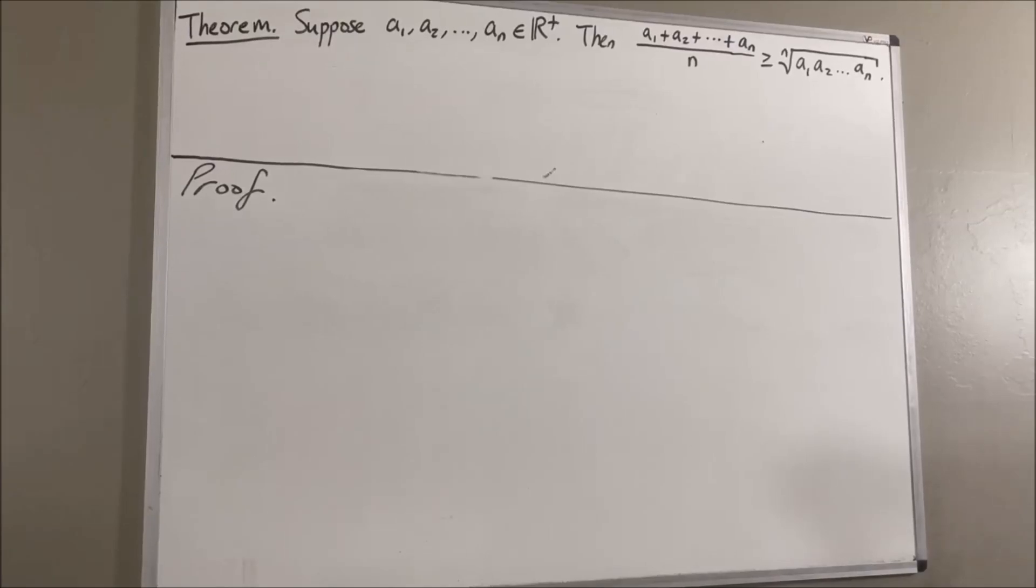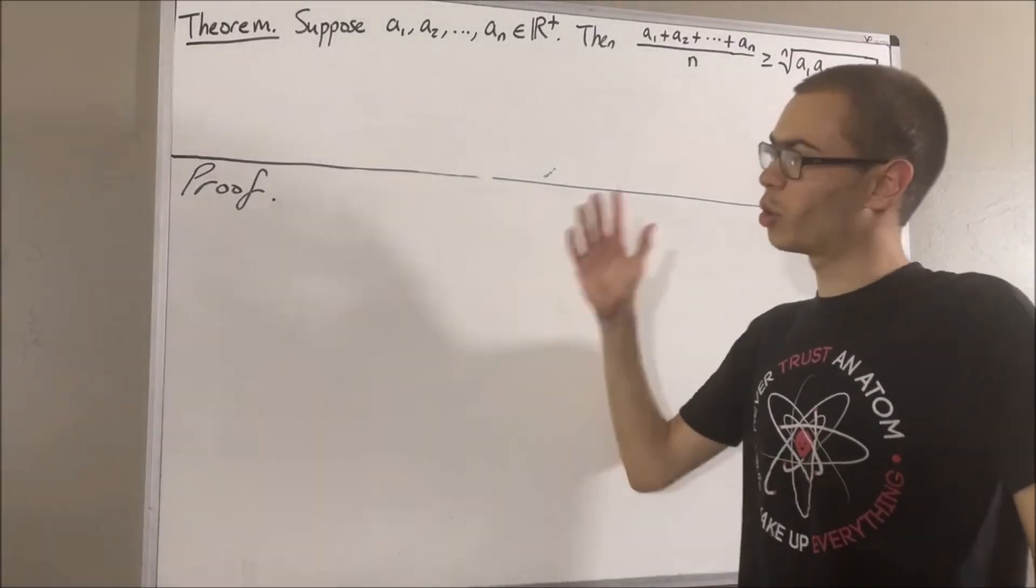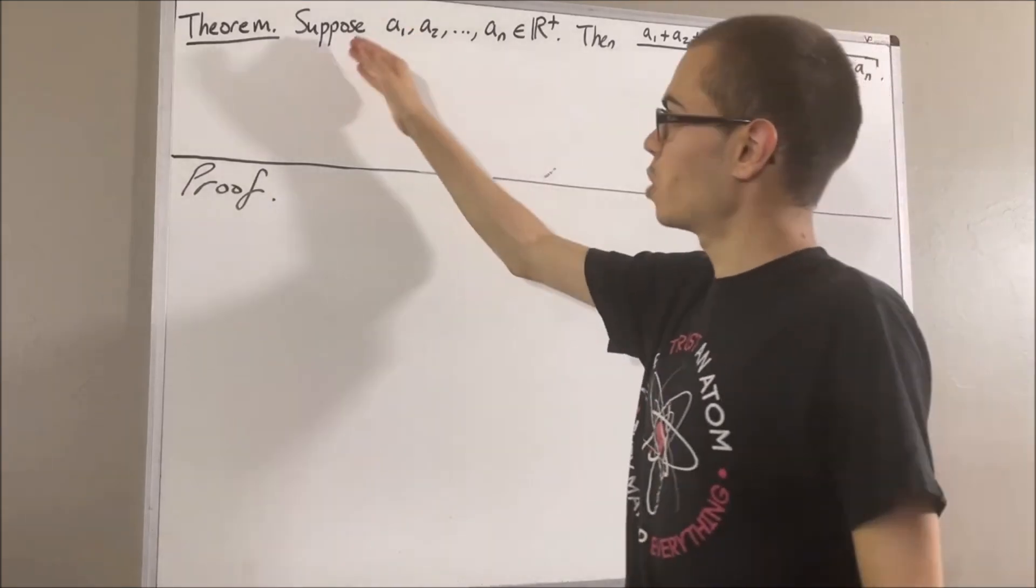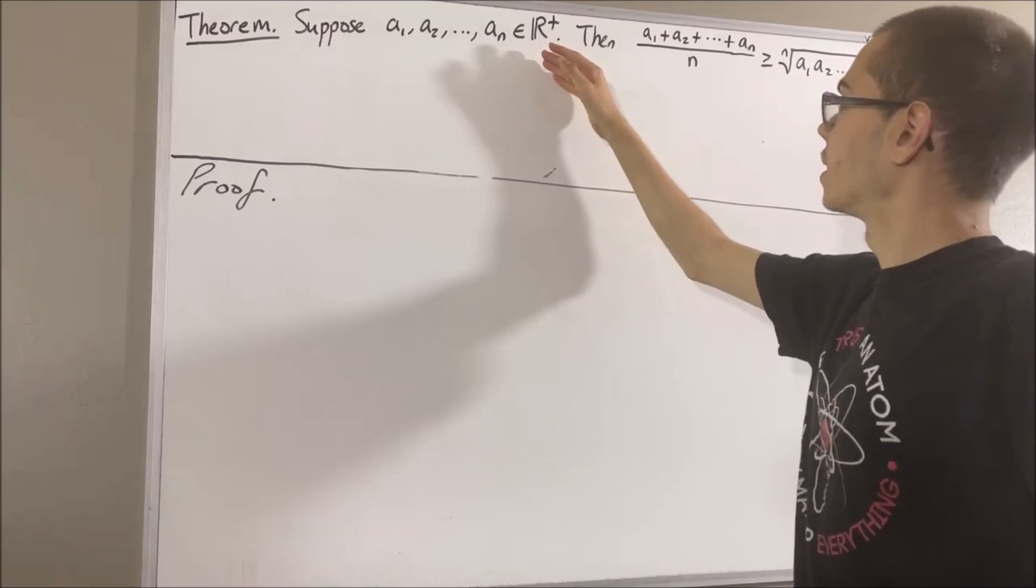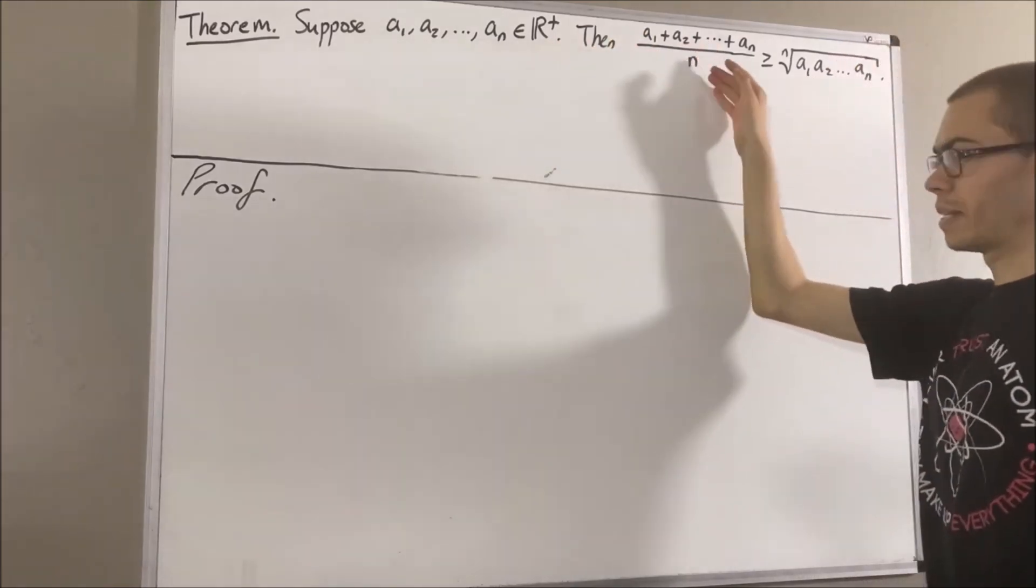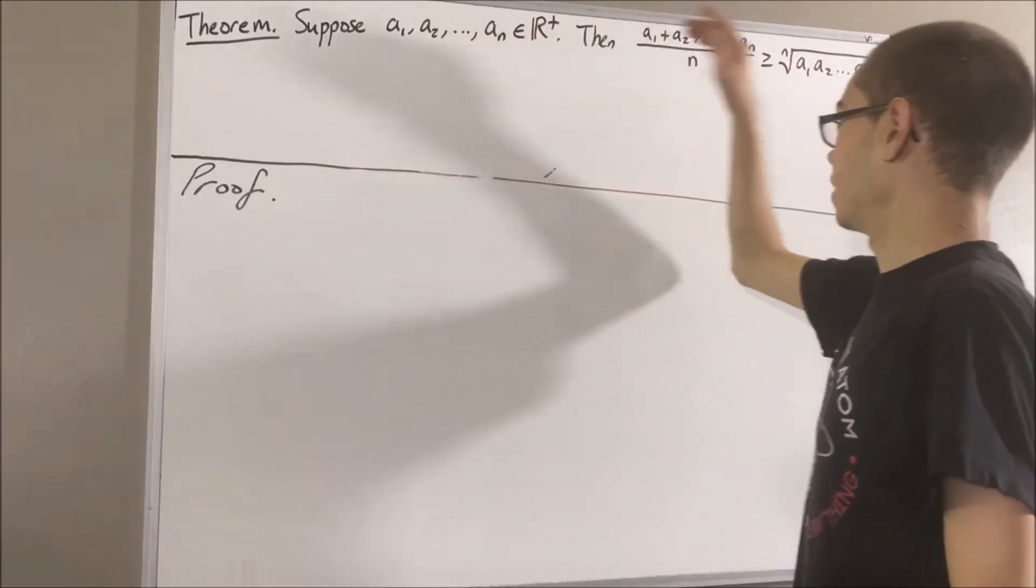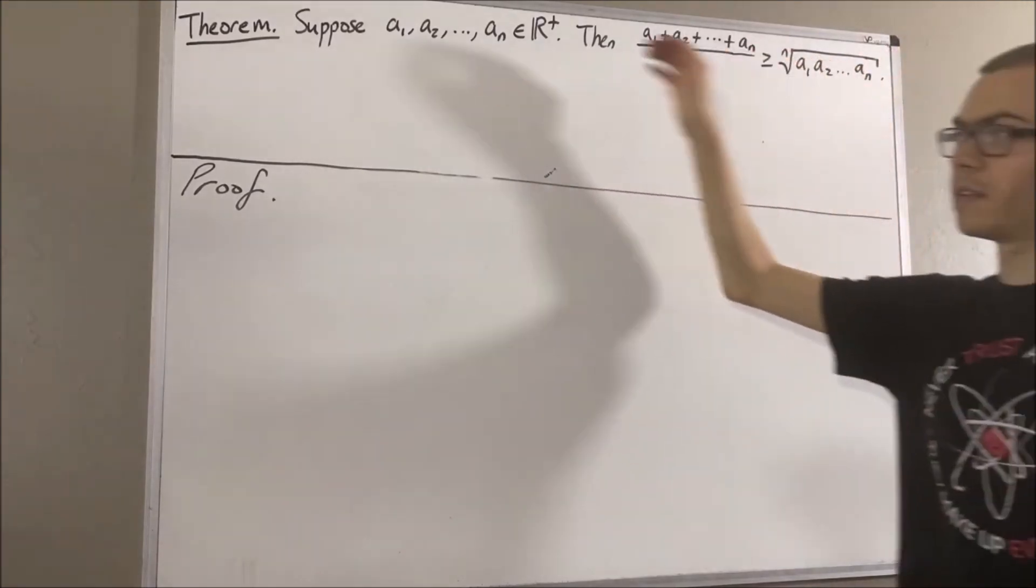Hello! In this video, we are going to prove the following theorem. Suppose a1 through an is a list of positive real numbers. Then, the arithmetic mean of this list is greater than or equal to the geometric mean of this list.